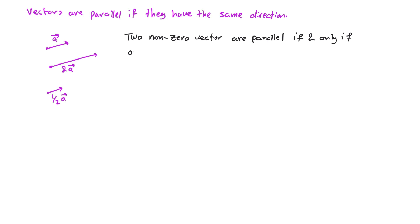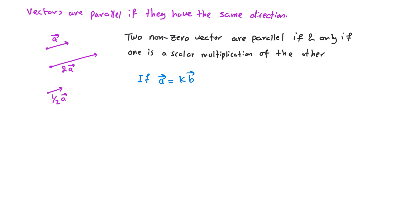To put this in a definition: two nonzero vectors are parallel if and only if one is a scalar multiplication of the other. In vector form, if vector a is equal to a scalar value k multiplied by vector b, then vector a and vector b are parallel.